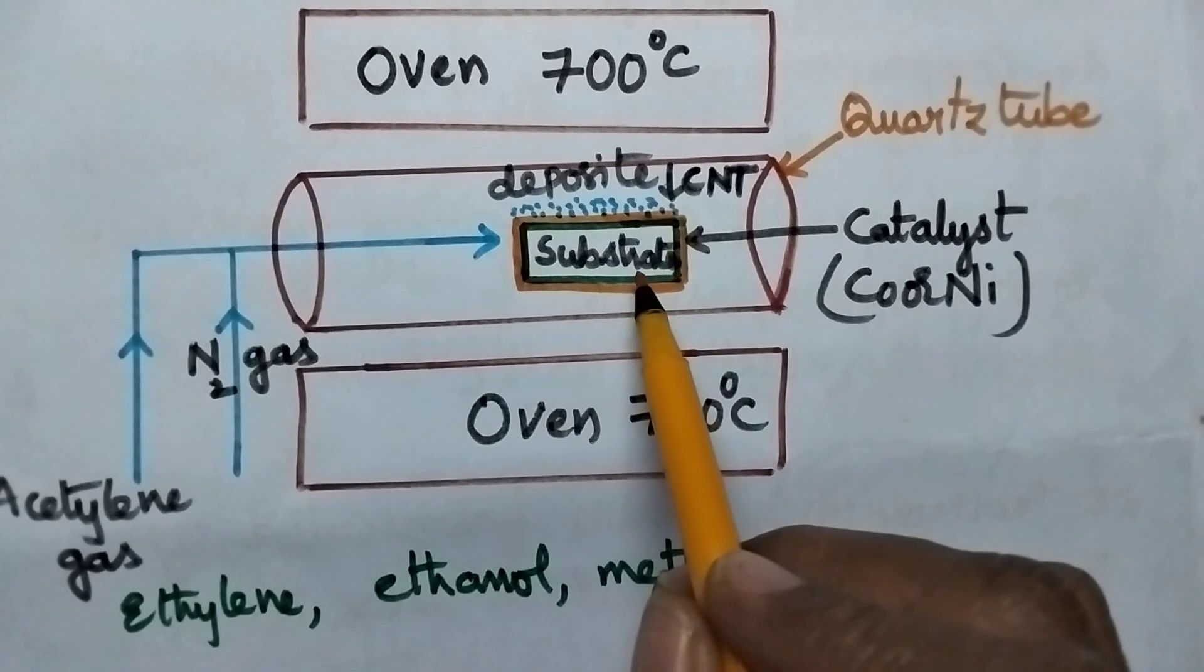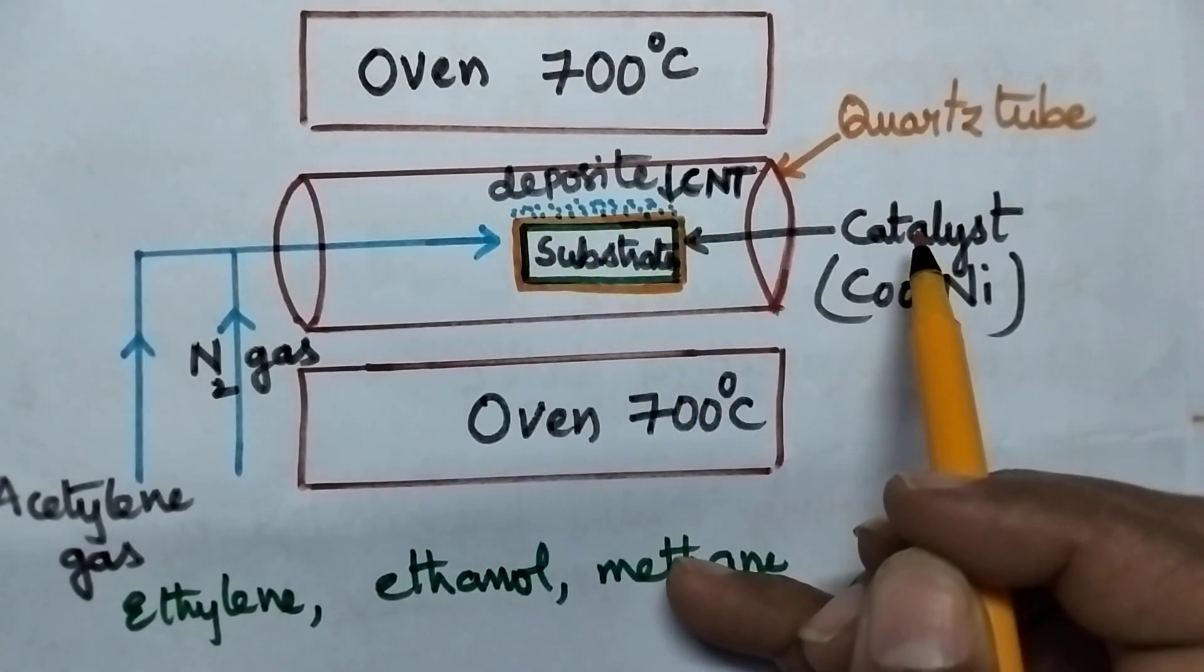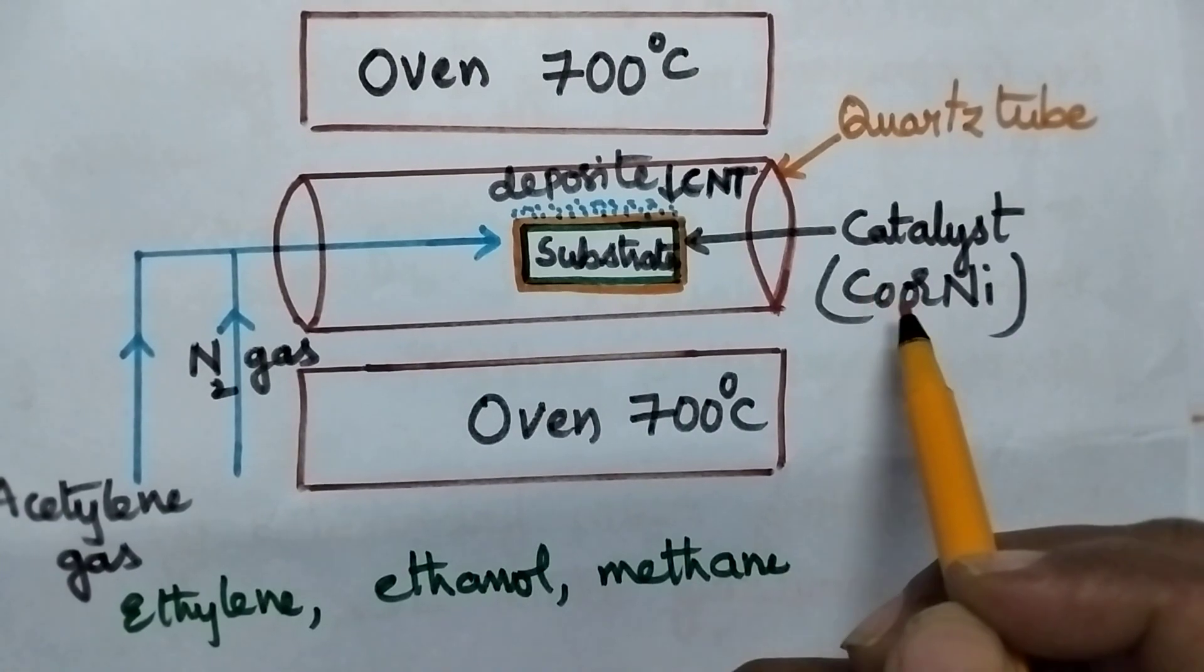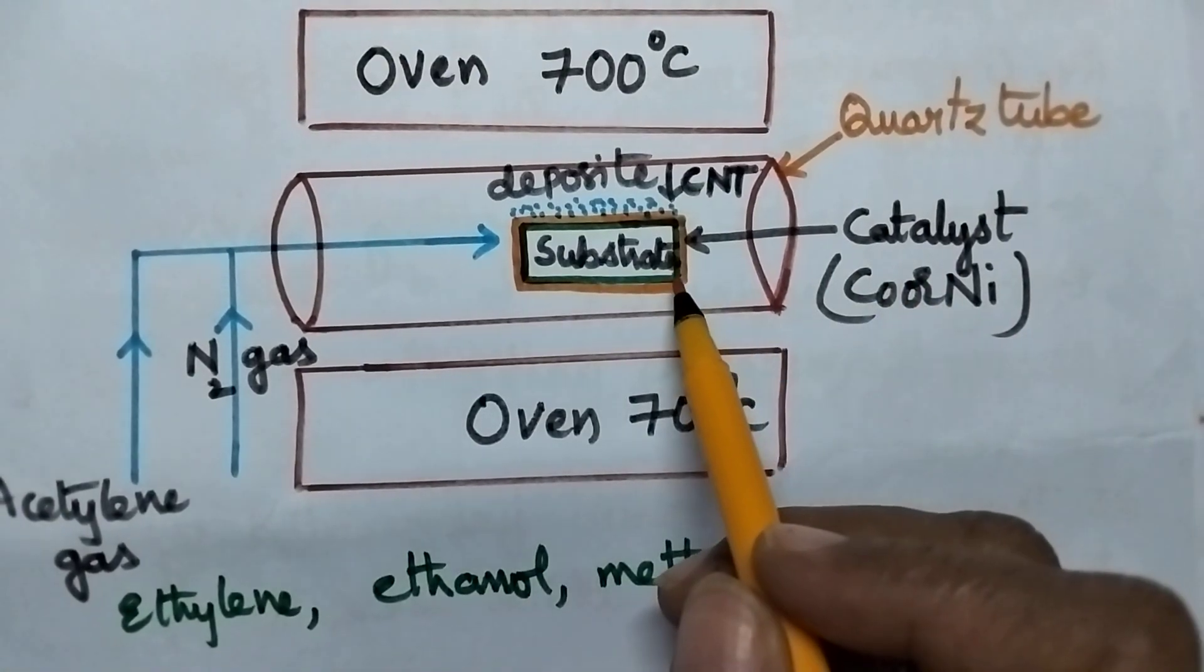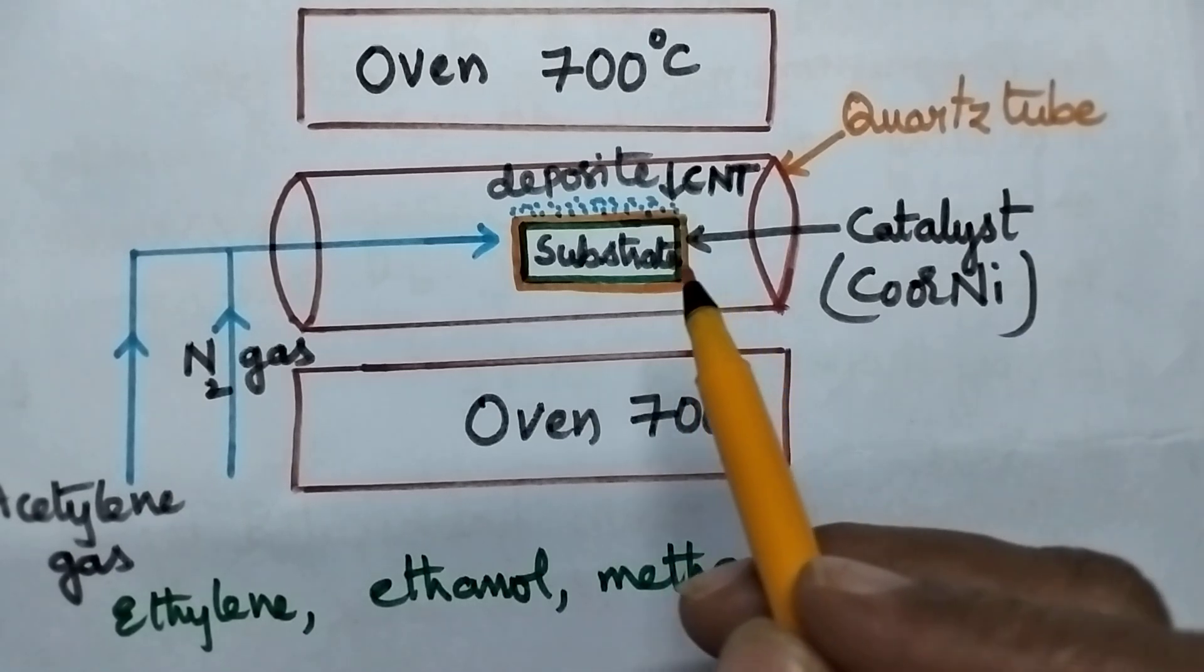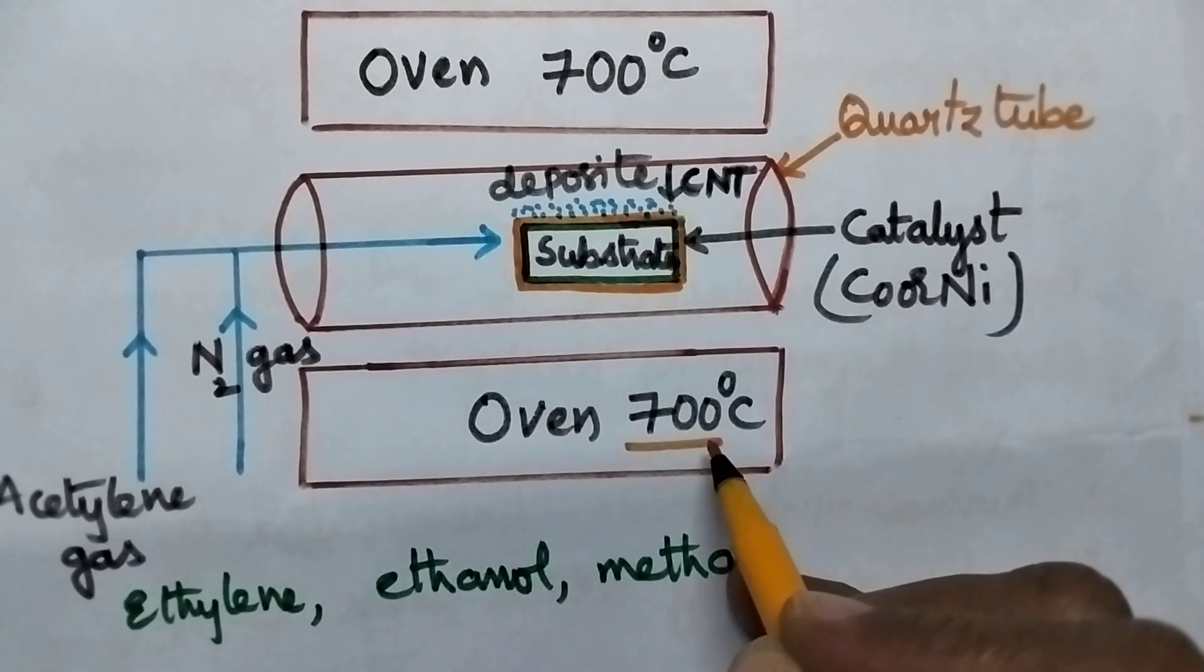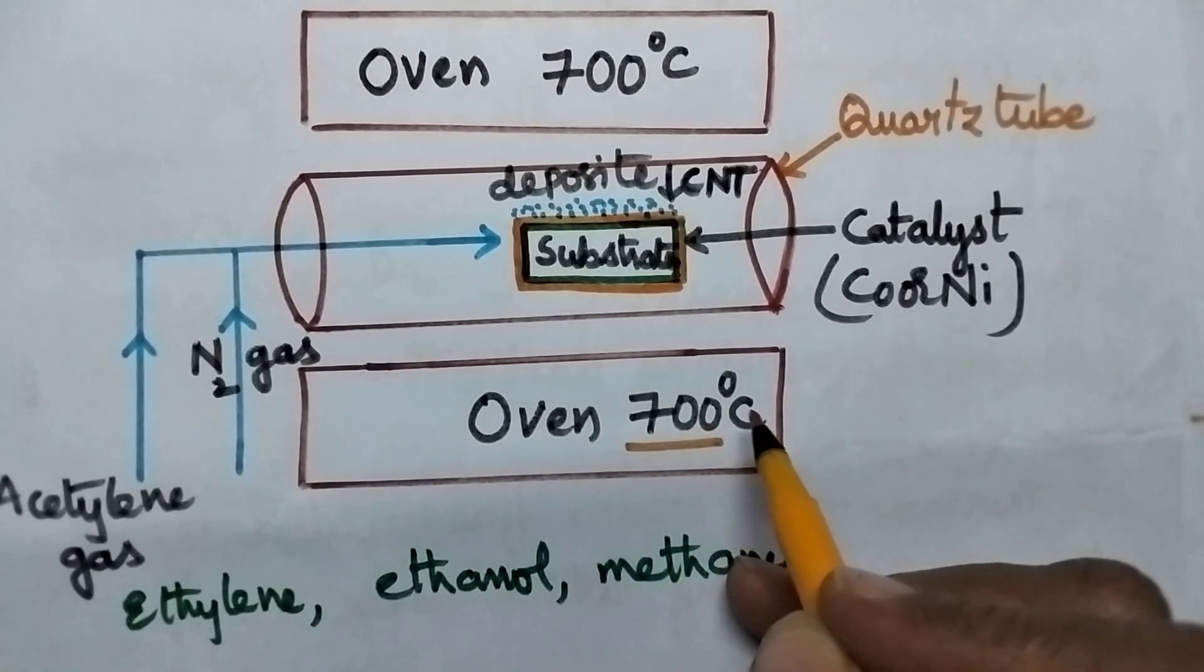Initially, a substrate is prepared with a coating of a catalyst like cobalt or nickel, and it is placed in a quartz tube to maintain an inert environment. It is then placed in an oven to maintain very high temperature, that is 700 degrees Celsius.